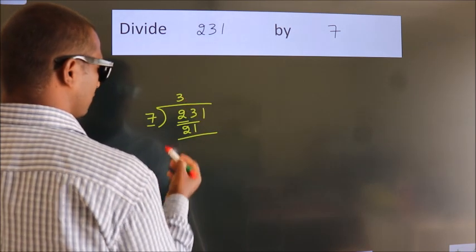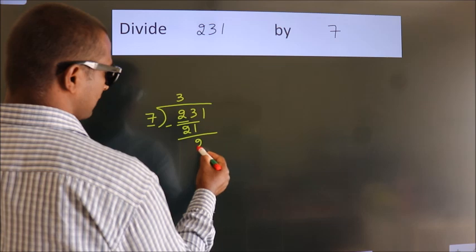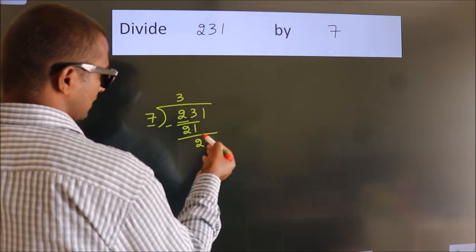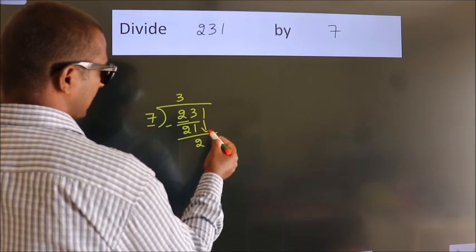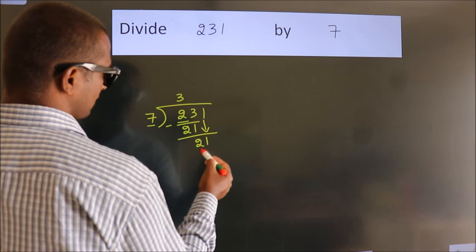Now we should subtract. We get 2. After this, bring down the beside number. So 1 down. So 21.